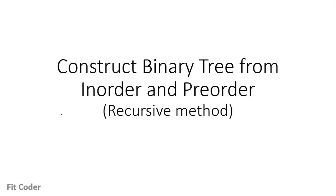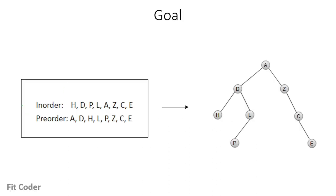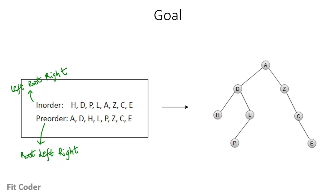In this video we will discuss how we can construct a binary tree from a given inorder and preorder traversal. It can be done both recursively and iteratively; here we will focus on the recursive method. The goal is, given these two traversals, to construct a binary tree. As we know, inorder is left-root-right and preorder is root-left-right.